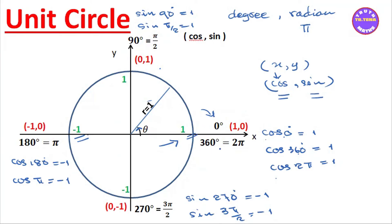Cos 0 is 1, cos 360 is 1, cos 2 pi is 1. Cos 180 equals minus 1, cos pi equals minus 1. Sin 0 equals 0, sin 360 equals 0, sin 2 pi equals 0, sin 180 equals 0. Sin 90 equals 1, sin pi over 2 equals 1. Sin 270 equals minus 1, sin 3 pi over 2 equals minus 1. Cos 90 equals 0, cos pi over 2 equals 0, cos 270 equals 0, cos 3 pi over 2 equals 0.